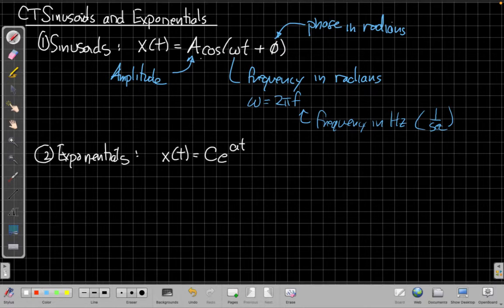And then the other signal we'll look at a lot this semester are exponentials. Exponentials take this form: x(t) = C e^(at), where C is again an amplitude scaling factor, and t is our continuous variable. There are two or really three ways these can look, depending on whether this a is real, imaginary, or a complex valued constant.